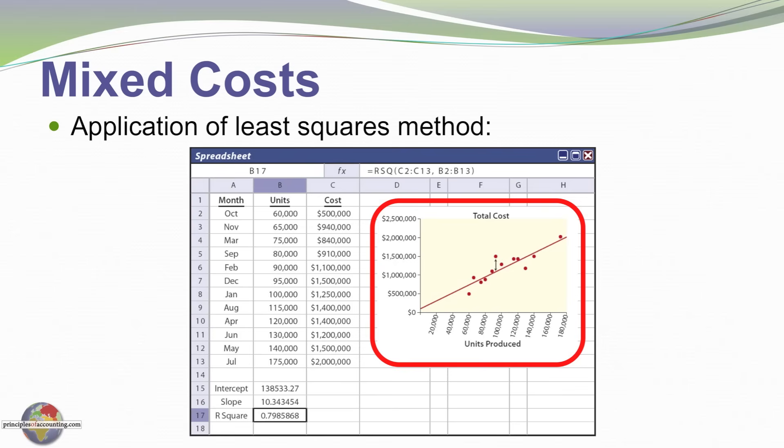But what regression analysis does is it optimizes that line through those data points. Remember it's called regression analysis or least squares regression. And so if we look at this particular point and we looked at each of the similar points and found the horizontal distance between the point and the line, the sum of the squared distances would be minimized with regression analysis. In other words, that's deemed to be the best fit line through those data points.